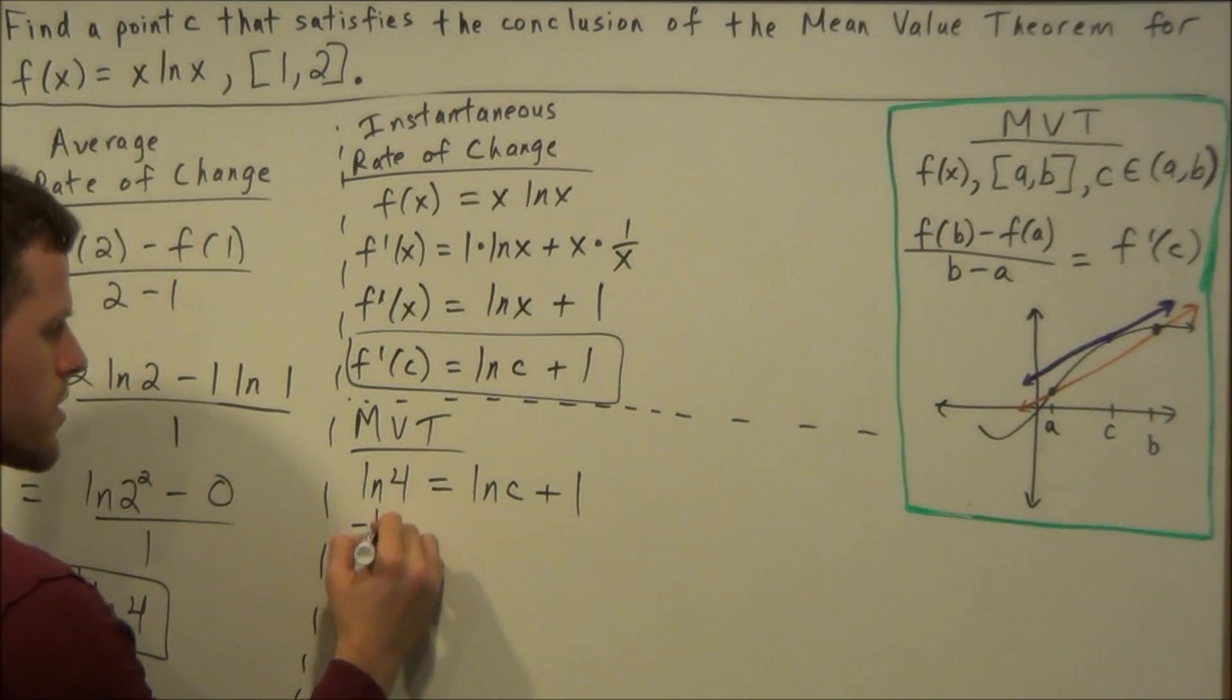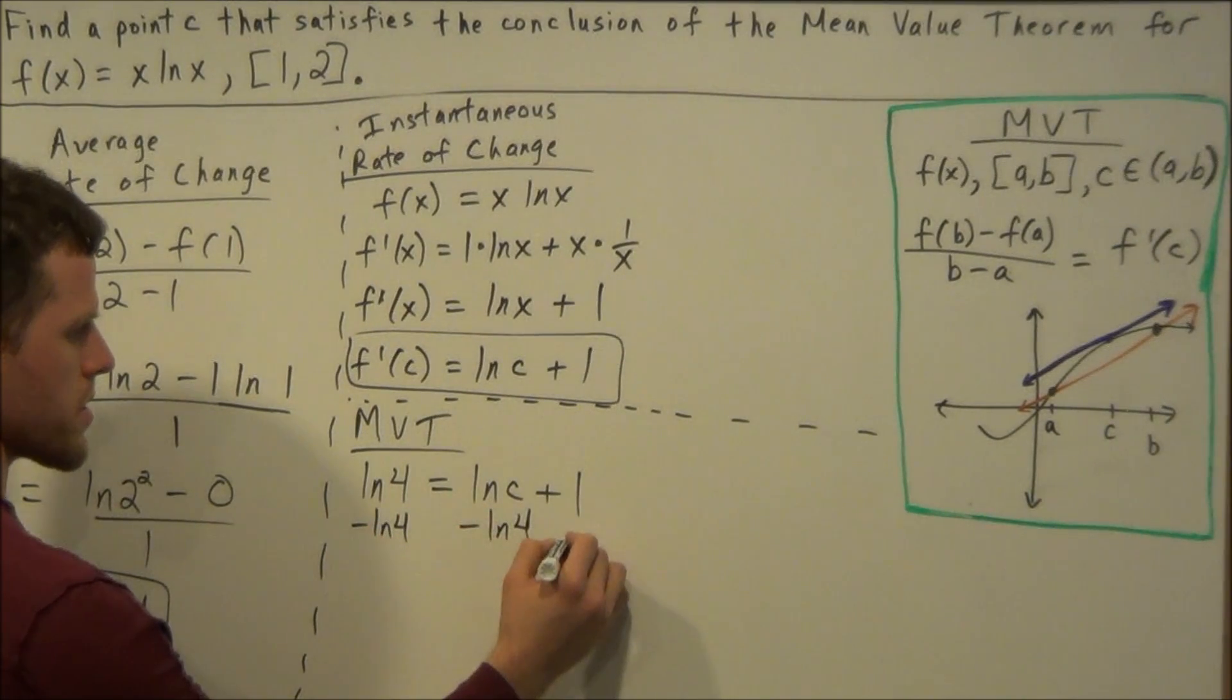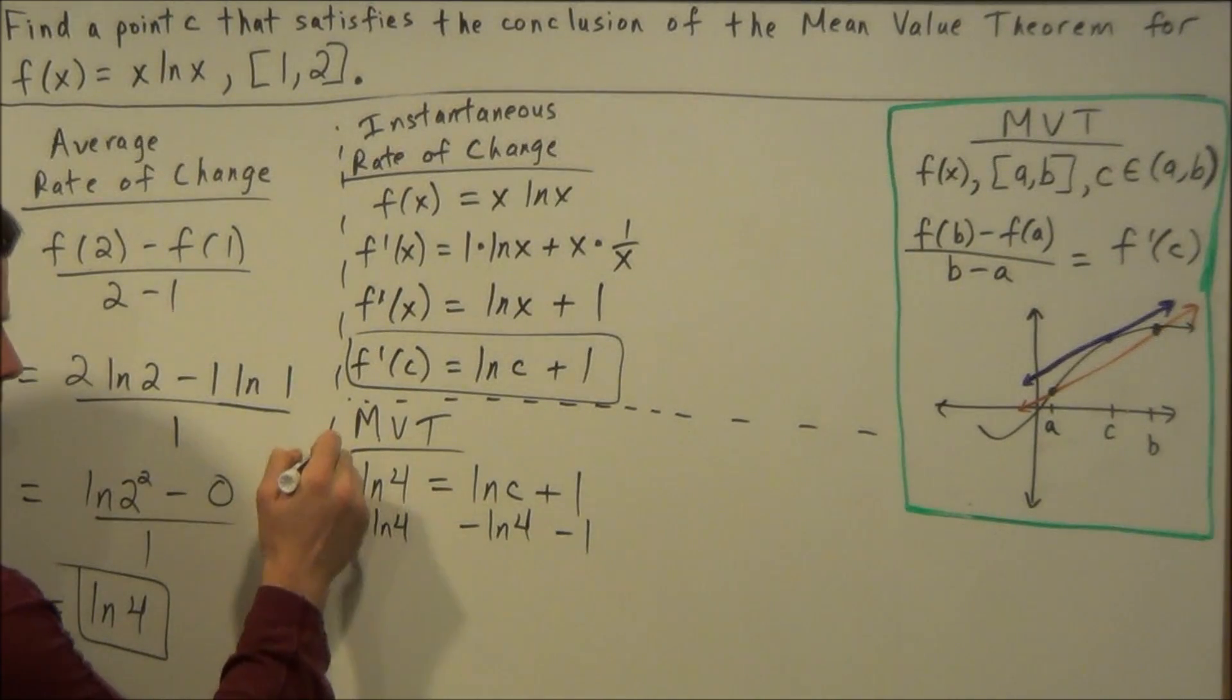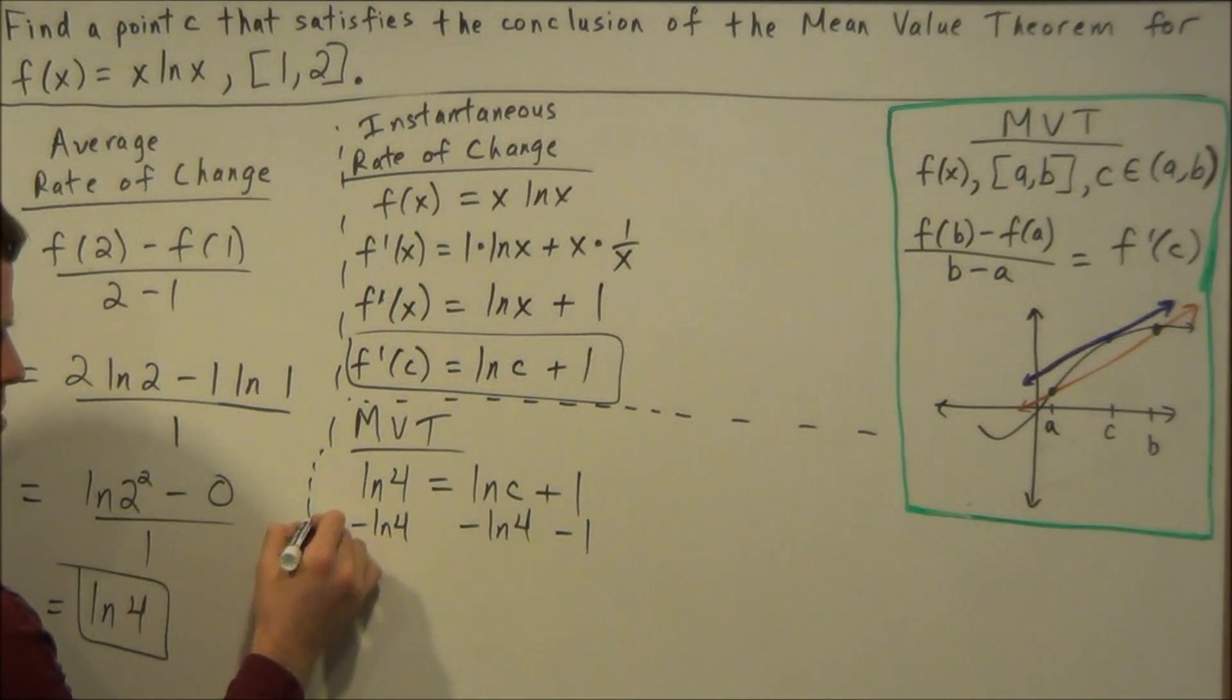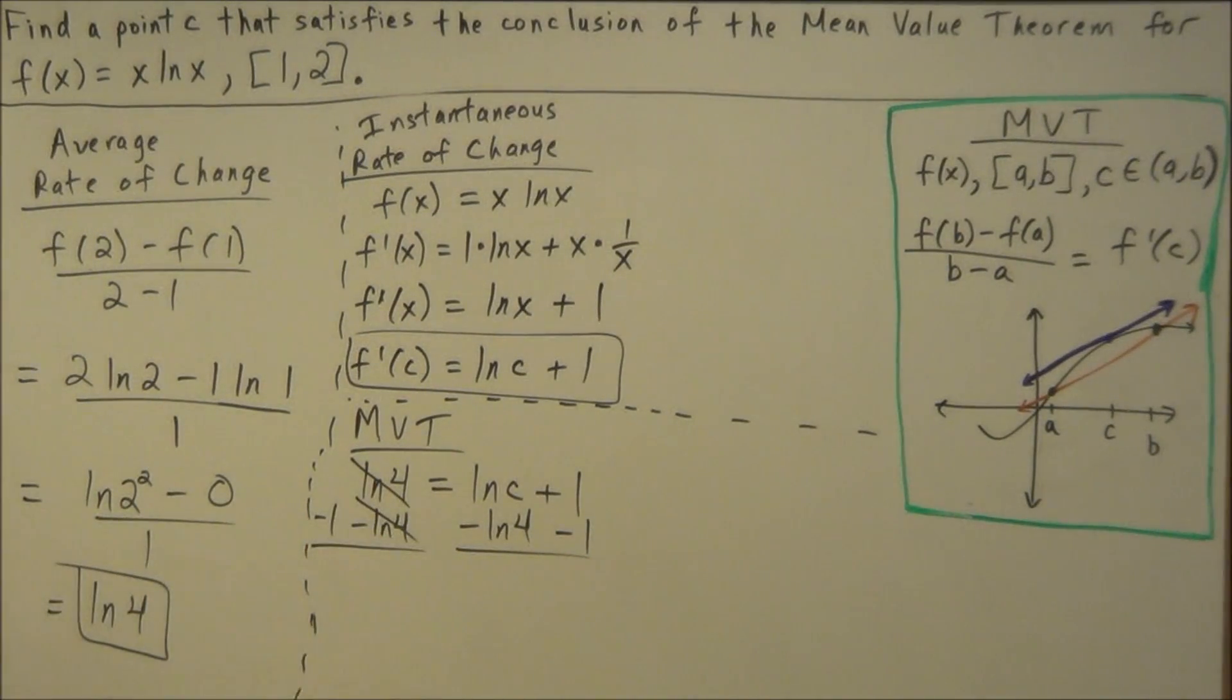But one way of doing it would be to subtract natural log 4 from both sides and subtract 1 from both sides. So we could write minus natural log 4 here, and we could subtract 1 on both sides as well. Extend this out. So we're going to subtract 1 on the left side as well.